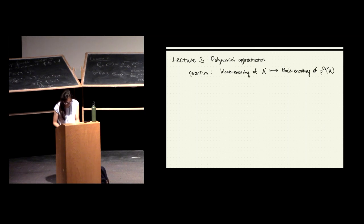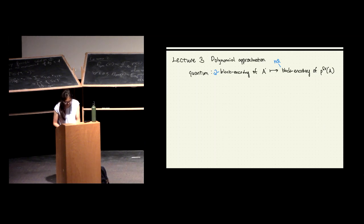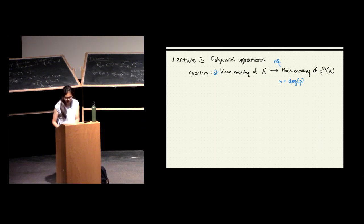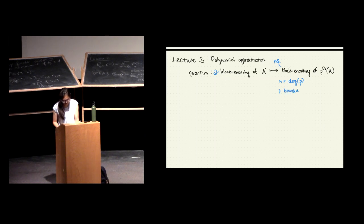If this was a Q block encoding, meaning the gate complexity is Q, then this turned into an NQ block encoding of P, where N is the degree of P. So provided that I want to implement some low-degree polynomial and P is bounded, then we could do this efficiently with our QSVT protocol.